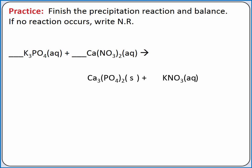Next, we'll balance our equation. Since we have all ionic compounds, we'll balance ions instead of atoms. If we start with one calcium phosphate, we can add a 3 in front of calcium nitrate to balance our calcium ions, and a 2 in front of potassium phosphate to balance our phosphate ions. Then we just need a 6 in front of potassium nitrate to balance both potassium and nitrate ions. Now we have a balanced chemical equation for our precipitation reaction.